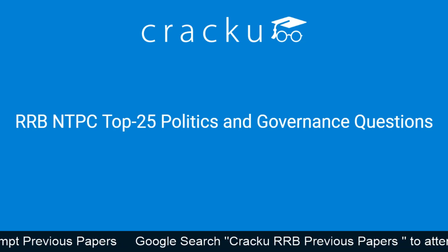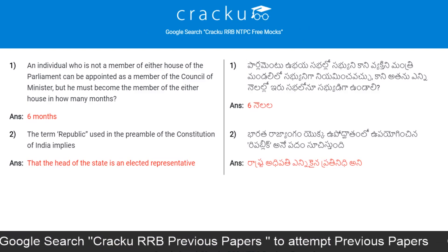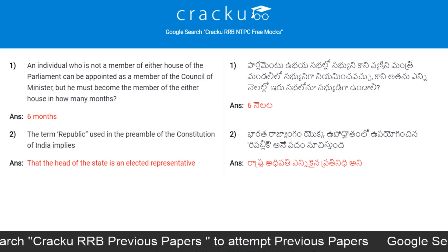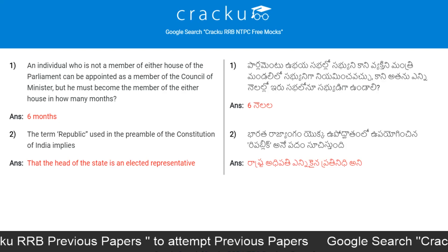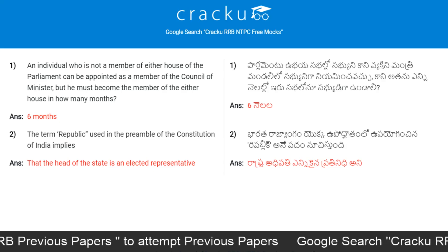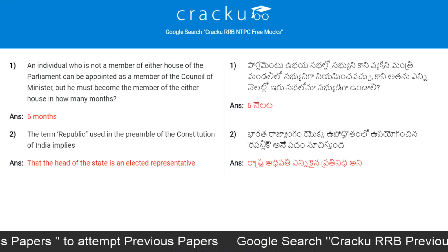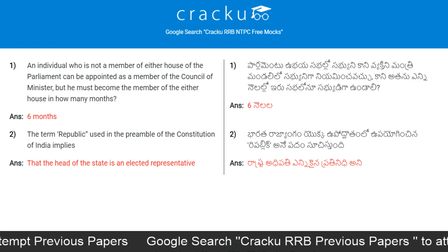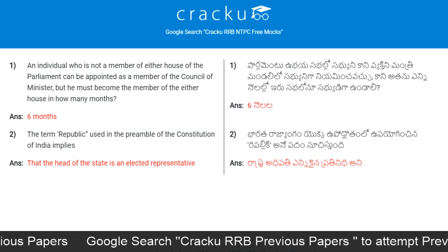Today's first question is: an individual who is not a member of either house of the parliament can be appointed as a member of the council of ministers, but he must become the member of either house in how many months? The answer is 6 months.